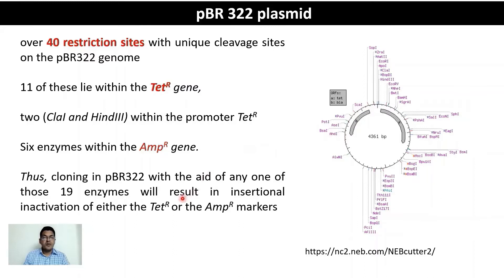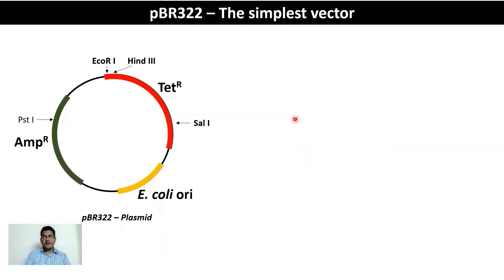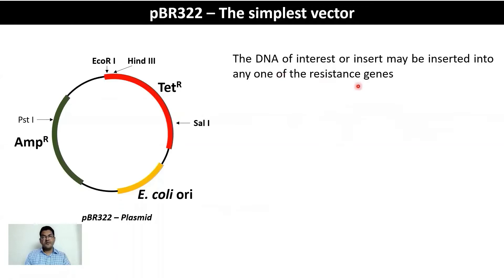Cloning in pBR322 using any one of these 19 enzymes results in insertional inactivation of either the tetracycline resistance gene or the ampicillin resistance gene. The DNA of interest may be inserted into either resistance gene; whichever gene the insert disrupts, the cell becomes susceptible to that specific antibiotic.